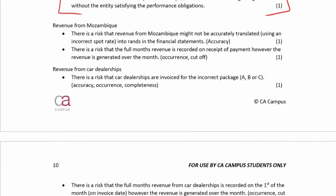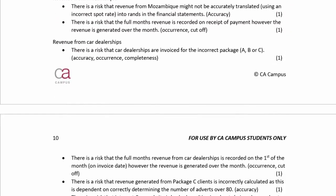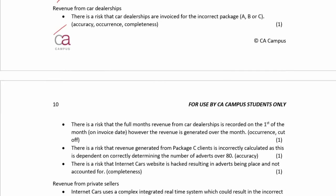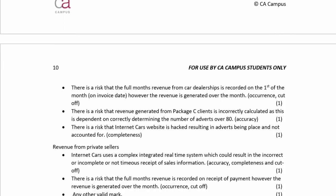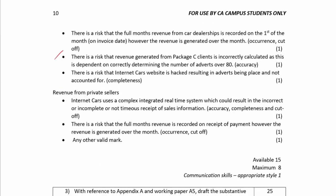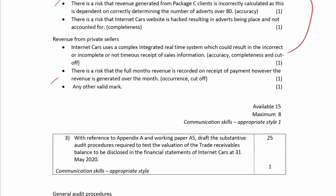Breaking it down by type of revenue: foreign revenue is incorrectly translated and potentially recorded upfront for dealerships with incorrect package allocation, and also recorded upfront for private sellers. For the Mozambican operations, the real-time system could result in errors. So there are lots of risks in the revenue area.